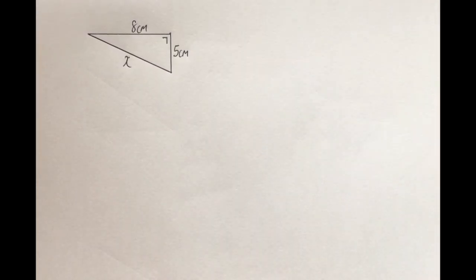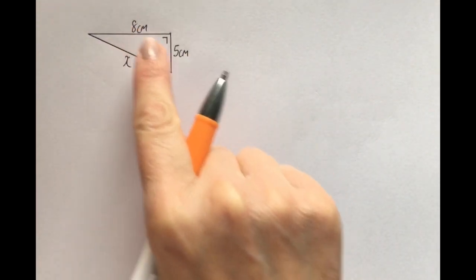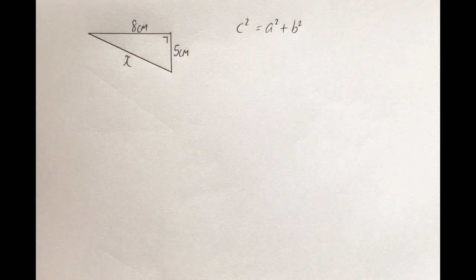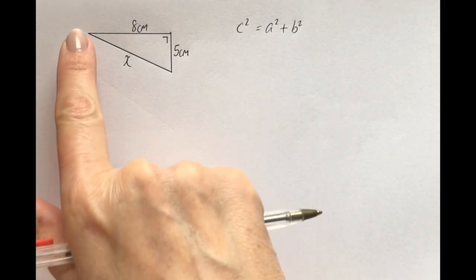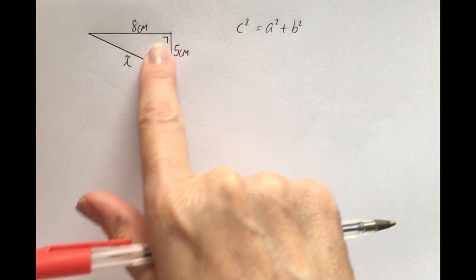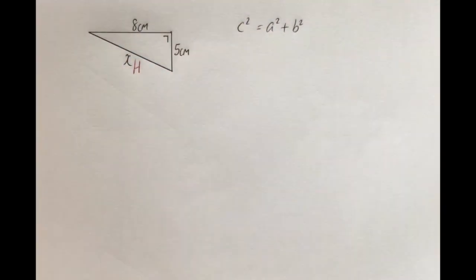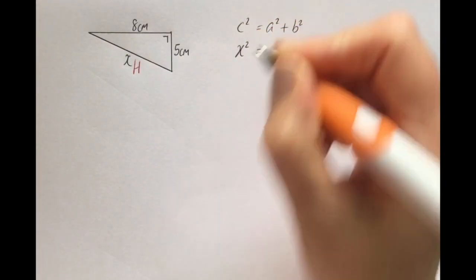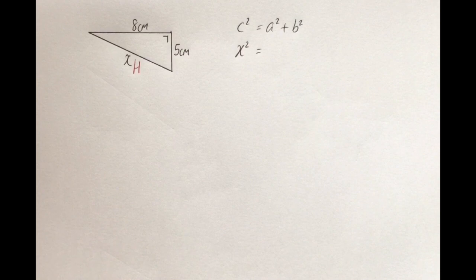Try this question — press pause and see how you get on. Again, it's a right-angled triangle, I'm given sides, I'm looking for a side, so we are going to use Pythagoras' theorem. The first thing I want to identify is which one is my hypotenuse — we want the diagonal, the longest side, opposite the 90 degrees — which is this one here. There's my hypotenuse, which is x again in this case. So I'm going to sub that in for c — instead of c squared, it will be x squared.